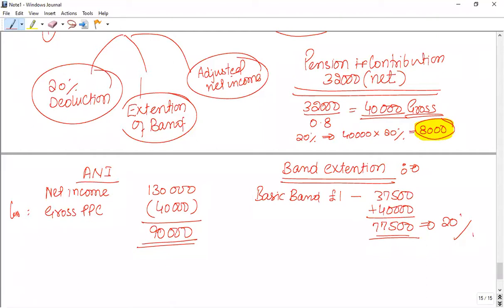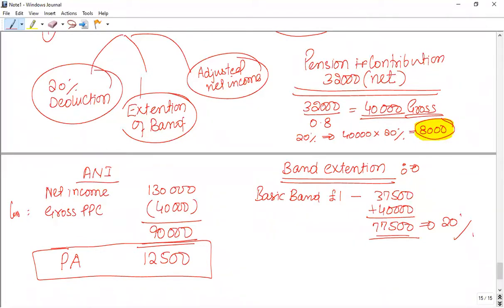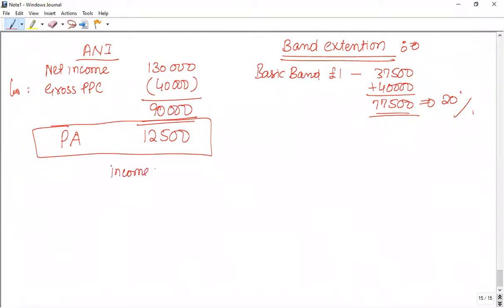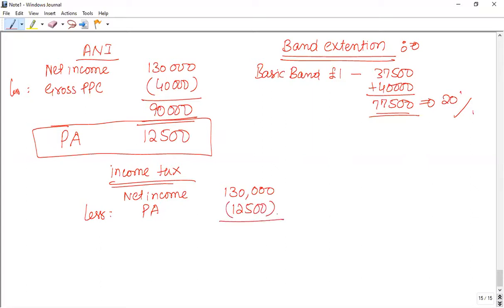The formula for adjusted net income (ANI) is: net income minus gross personal pension contribution. Net income is £130,000 minus £40,000 gross PPC, giving ANI of £90,000. Since ANI is now below £100,000, Tetra is able to get the full personal allowance of £12,500. This reduces income tax liability — on one side we get personal allowance, on the other side we get an extension of the tax band.